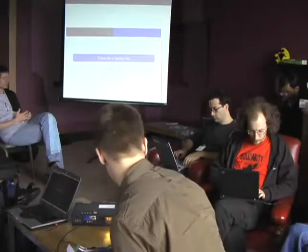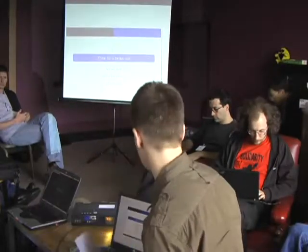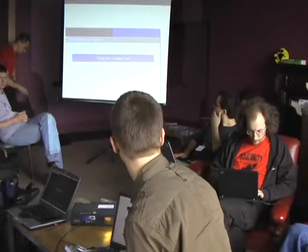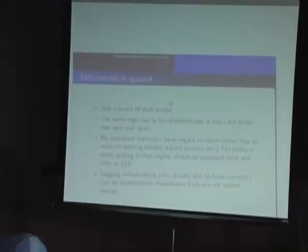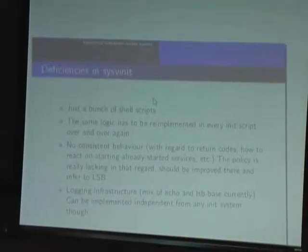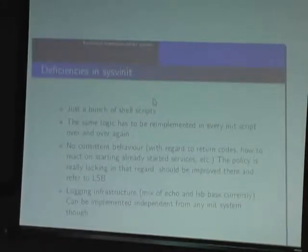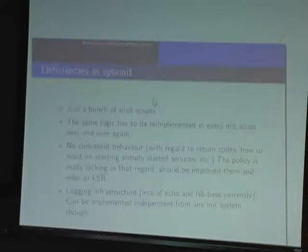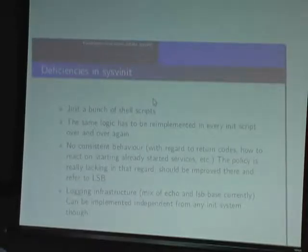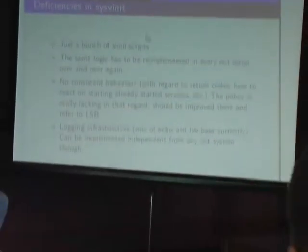I want to start with some shortcomings I currently see in our current system. Our current init system is just a bunch of shell scripts. If you look at one of the shell scripts, it starts the daemon and you check the return code and based on that you do a log message and so on. If you have to re-implement this again and again and the policy changes over time, we have a very inconsistent init system at the moment. We don't really have specified what return codes we have to use. There is the LSB and I think we should in the policy refer to the LSB for what return codes we expect, to at least improve our current system.